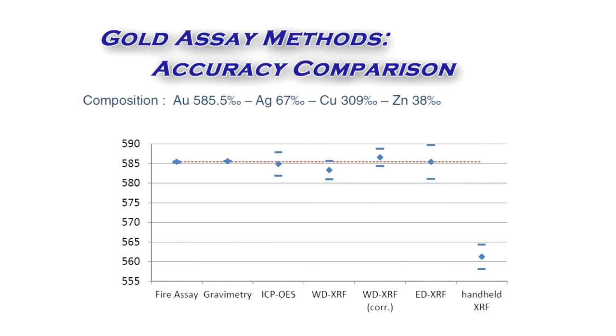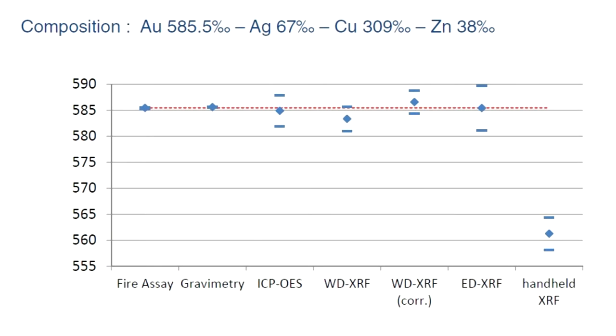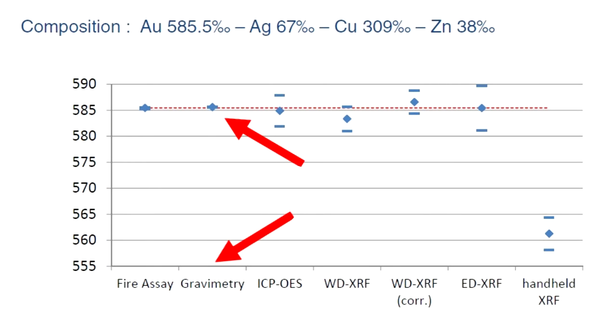Gravimetric analysis is highly accurate and preferred over instrumental analysis for precious metal concentrations in excess of 5%. The trade-offs between the methods are generally time and cost versus accuracy of results.